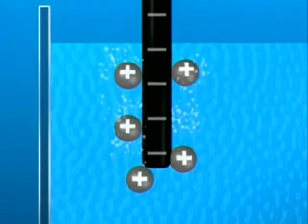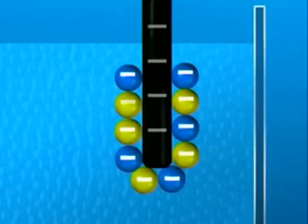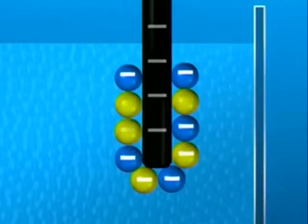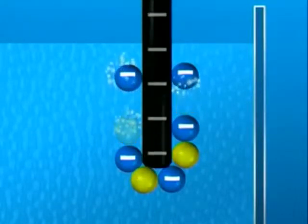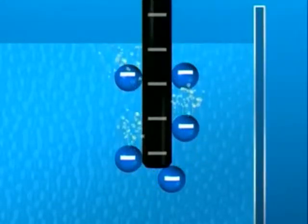Competition also happens at the positive electrode. This time, chloride ions win out, losing their negative charge and forming bubbles of chlorine gas.